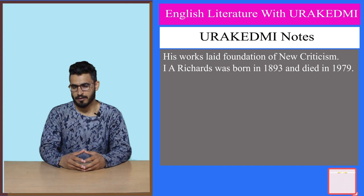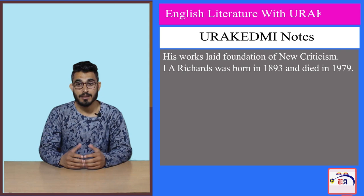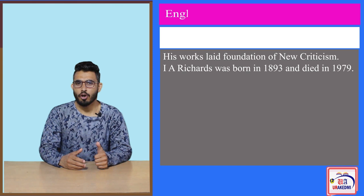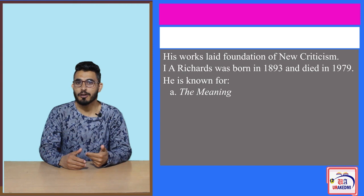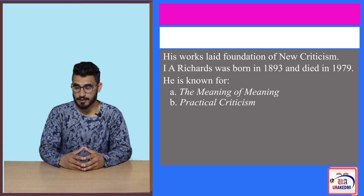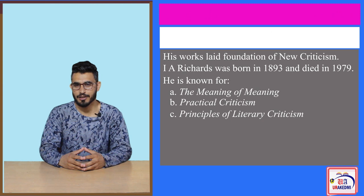I.A. Richards is credited with some significant and important books in the context of literary theory. For example, he is known for The Meaning of Meaning, Practical Criticism, and The Principles of Literary Criticism. These are some of the important contributions made by I.A. Richards to literary theory.